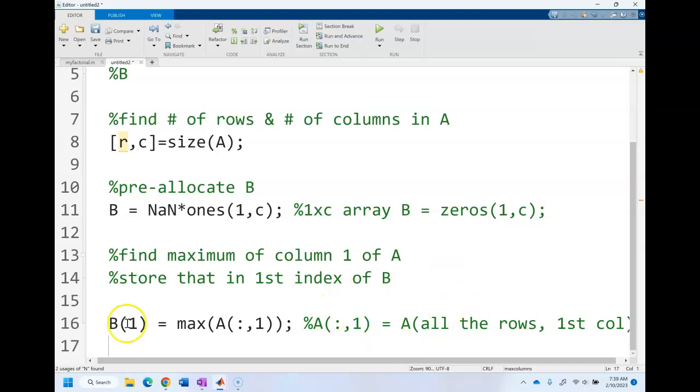That's how we do this for just the first one, but we want to do this multiple times. We're going to do it for the second one, the third one, the fourth one, the fifth one. If we knew how many columns were going to be in A each time, we could just copy and paste this line and replace one with two, replace it with three, replace it with four and so on.